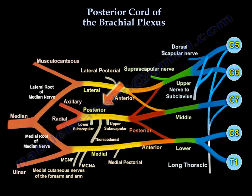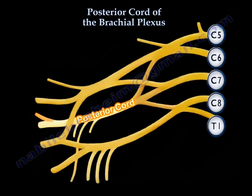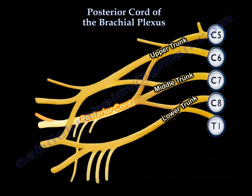Posterior Cord of the Brachial Plexus. The posterior cord is made up of the posterior division of all three trunks: the upper, the middle, and the lower trunk. It usually has fibers from C5 to C8. The presence of T1 fibers is variable.